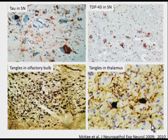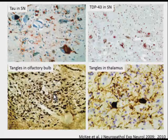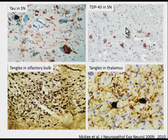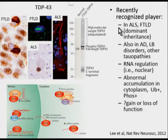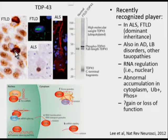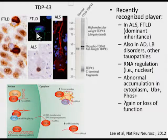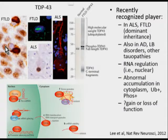In addition to tau, CTE also shows the protein TDP43—found in the substantia nigra, olfactory bulbs, and thalamus. TDP43 has been seen in other disorders: it's been found in ALS and in frontotemporal lobar degeneration, where rather than remaining in the nucleus, it translocates into the cytoplasm, an abnormal location. In a fluorescent preparation it appears as a bullet-shaped inclusion rather than a diffuse nuclear staining presence.